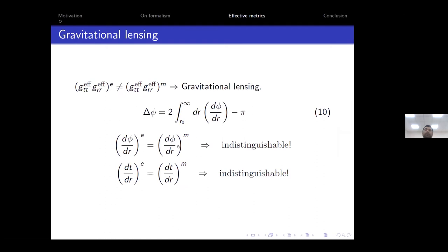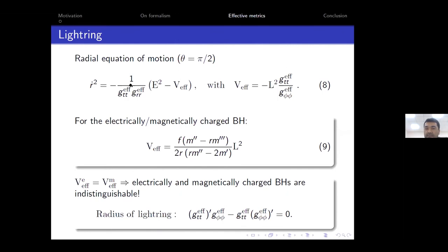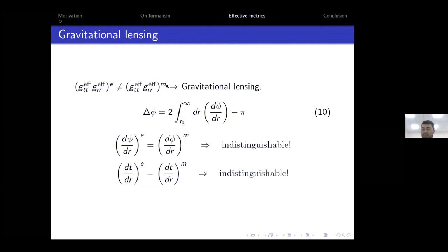Returning to the effective metrics of the electrically and magnetically charged spacetimes, the time and radial components of the metric tensors are different. This gives renewed hope: the product of the time and radial components of the metric tensors is different for the two cases, suggesting that gravitational lensing might distinguish them. However, after calculating the deflection angle, the electrically and magnetically charged cases again give equations of the same form. Time delay calculations also yield the same result. Therefore, we again cannot distinguish the type of charge.